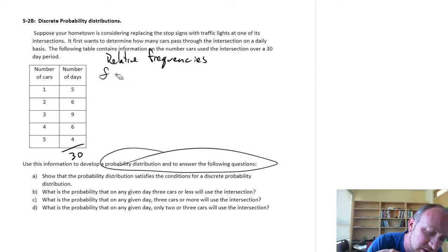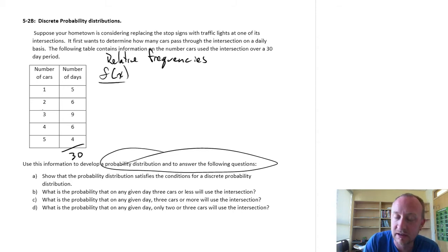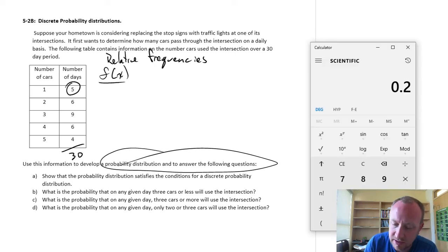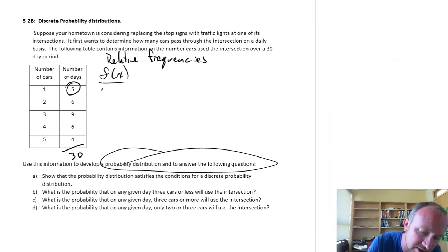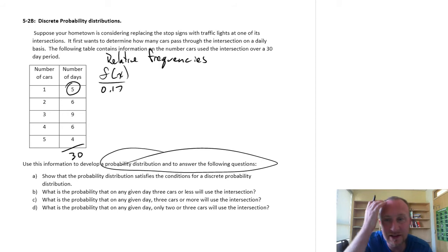To calculate those relative frequencies, calculate these f of x, I simply need to calculate the probability 5 divided by 30 to give me my relative frequency for one car. So 5 divided by 30, let's round that to 0.17. This means that on a randomly selected day, there is a probability of 0.17 that only one car is going to use that intersection.